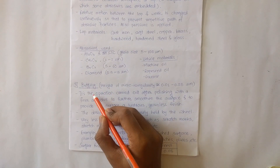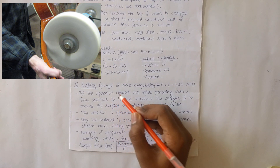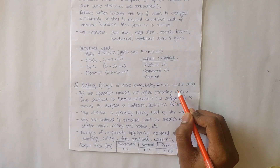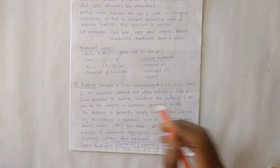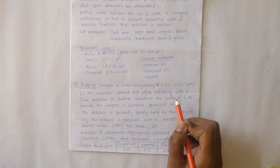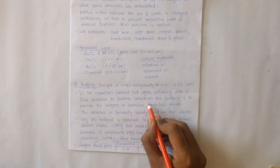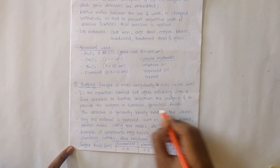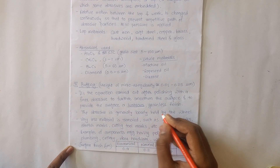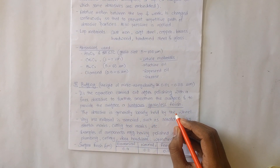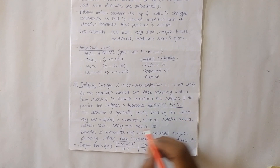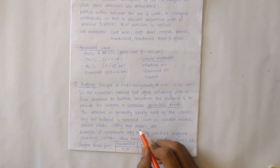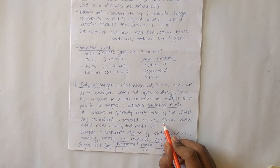The third process is buffing. The height of micro irregularity in buffing is approximately 0.01 to 0.25 micrometers. It is an operation carried out after polishing with a finer abrasive to further smoothen the surface and provide a lustrous, grainless finish. The abrasive is generally loosely held by the wheel, and very little material is removed — such as scratch marks and cutting tool marks on the workpiece.